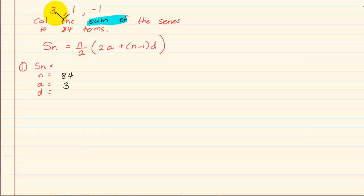You have A which is equal to 3 and you can calculate D by doing the test. Term 2 minus term 1, so 1 minus 3 which equals minus 2. Once you have all the information, which is 3 out of 4, you simply go to the formula and substitute.